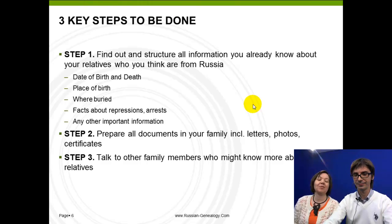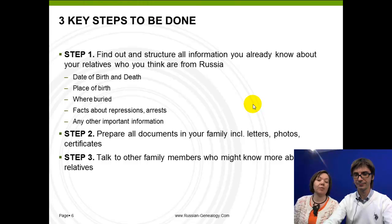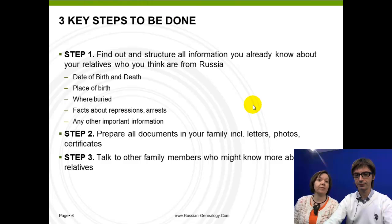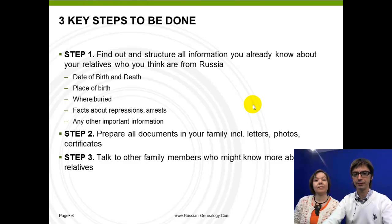The first step is to find out and structure all information you already have and know about your relatives who you think are from Russia. This includes date of birth and death, place of birth, where they were buried, and other facts such as repression or arrest in Russia. The second step is to study all documents in your family archive, such as letters, certificates, photographs, postcards, etc. The third step is to talk to other family members who know something about relatives in Russia to find links between them. These are basic things, but if you start from them, it will be much easier to continue.